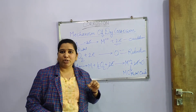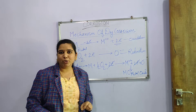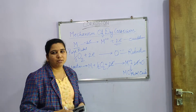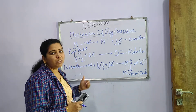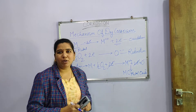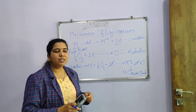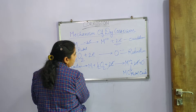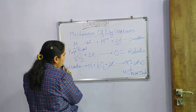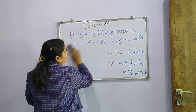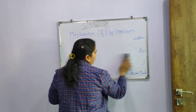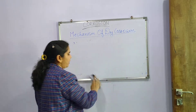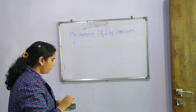This mechanism of dry corrosion is very important from an exam point of view and can be asked for 2 to 3 marks. Hope you understood it. Now, after this we will see the next topic related to dry corrosion — a small diagrammatic representation.